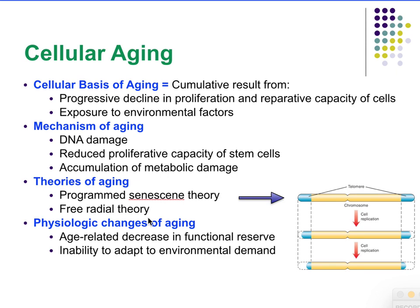There are theories related to aging. The programmed senescence theory suggests that cell aging is programmed within your DNA. At the ends of chromosomes are telomeres. Each time DNA replicates, you copy one less telomere, so the telomere gets slightly shorter with each replication. Once you run out of telomeres, the cell is no longer able to replicate — essentially, the cell has aged out.